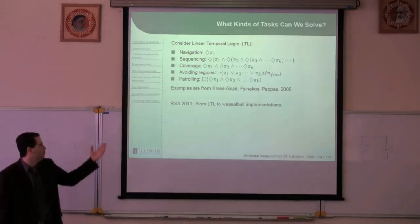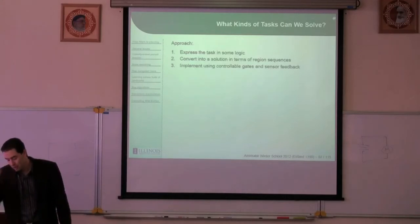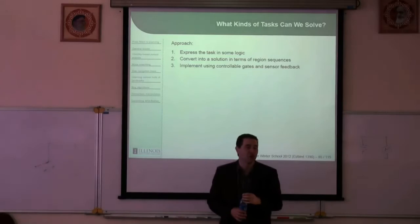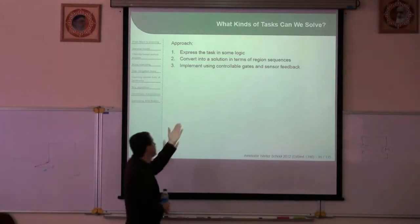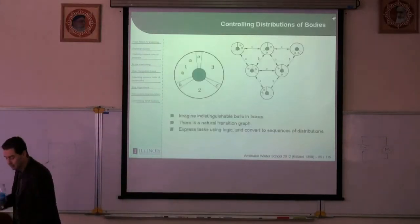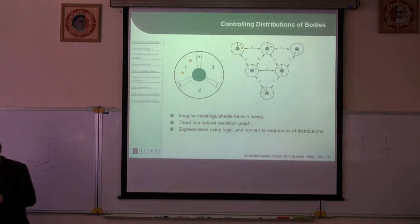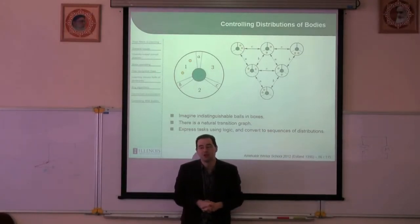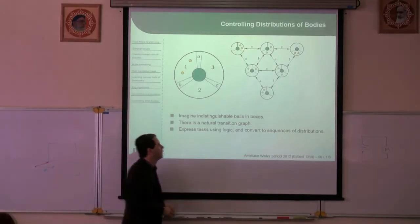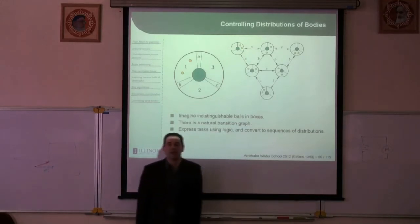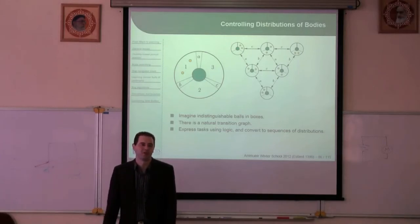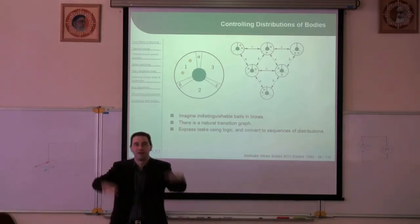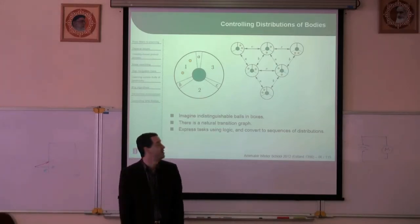Very simple systems that implement what looks like very sophisticated tasks. The approach: express the task in linear temporal logic, use model checking software to convert it into a specification in terms of sequences of regions, then implement it using controllable gates and sensor feedback. If there are multiple bodies, this is like a transition diagram on the space of all balls and boxes. With this very simple system, we can induce any transitions we want on the space — any distribution of balls we can achieve. It will just happen by putting wild bodies inside and doing sensor feedback.